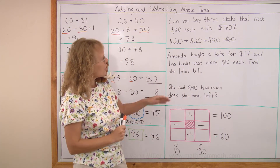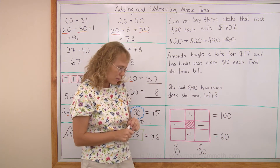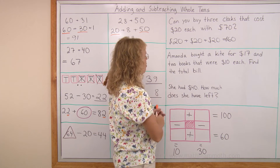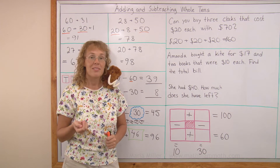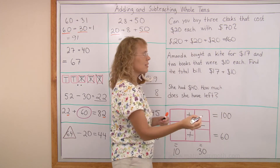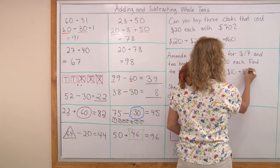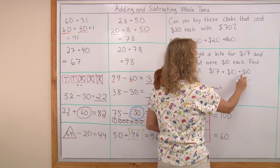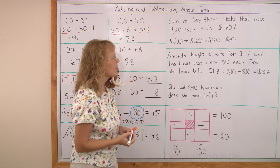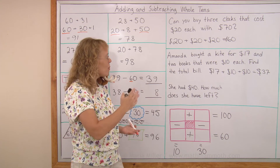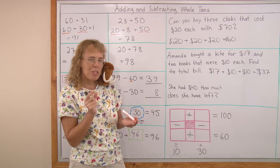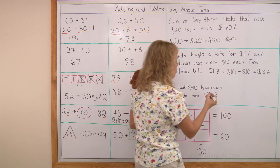Amanda bought a kite for $17 and 2 books that were $10 each. Find the total bill. What do you do to find the total bill? You add. So we need to add 17, then 10, and one more 10 because there were two books. 10 and 10 and 10 and 7 — so 10 plus 10 plus 10 is 30, and then I have the 7: $37. She had $40 — how much does she have left? It takes $37 to buy those things; she had $40. The difference is just $3 left after her purchase.